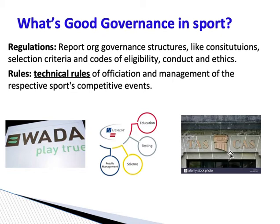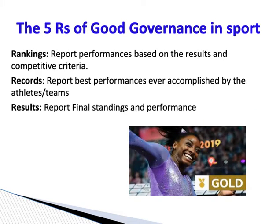The remaining three R's are rankings, records, and results. Rankings report performance based on results and competitive criteria — when following professional sports leagues, we look at rankings every week. Records represent the best performance ever accomplished by athletes or teams — in track and field, for example, you have world records, American records, state records, and venue records. Results are the final standings and performance reports. The reason people follow sports is because they care about results, so results are also one of the five R's of good governance in sport.